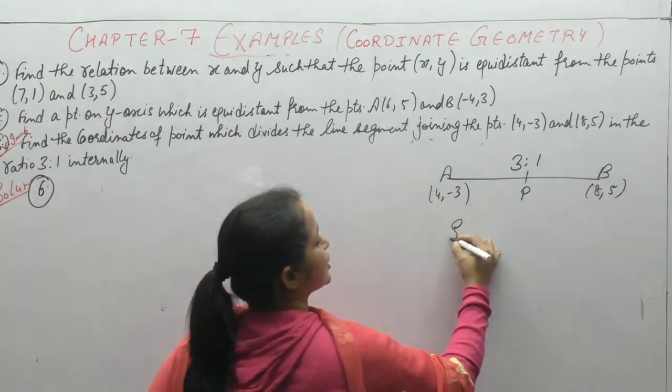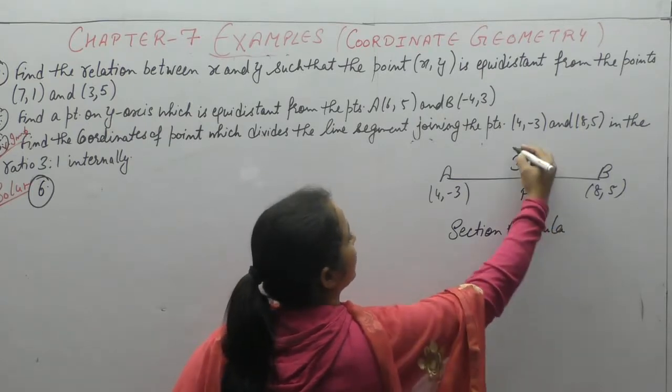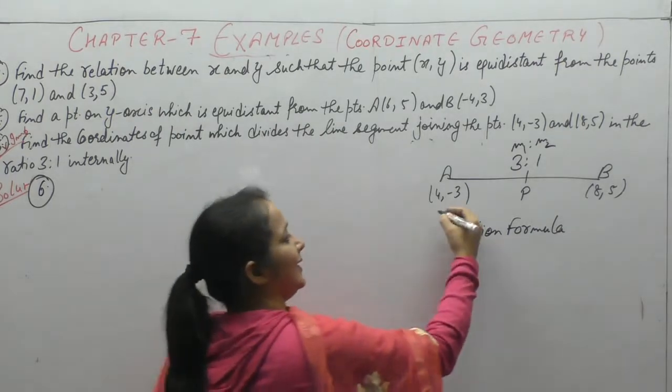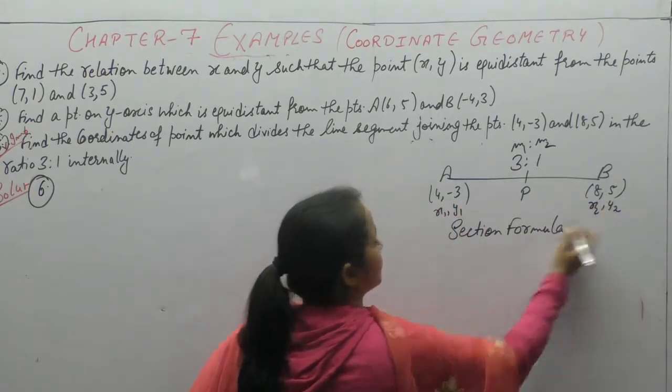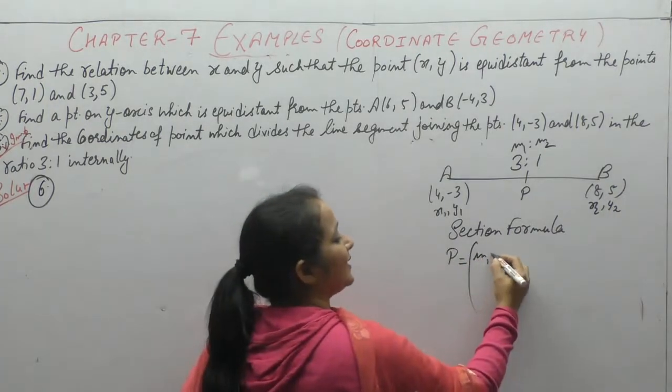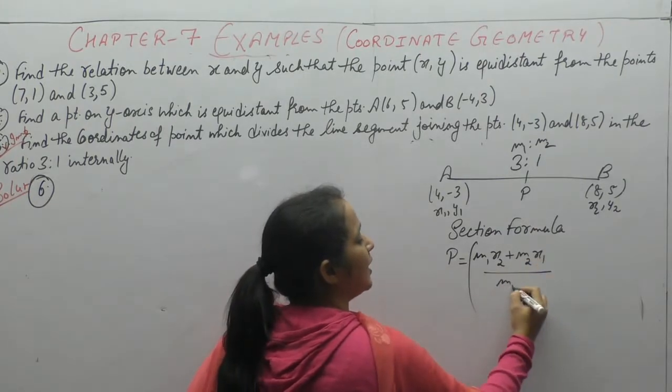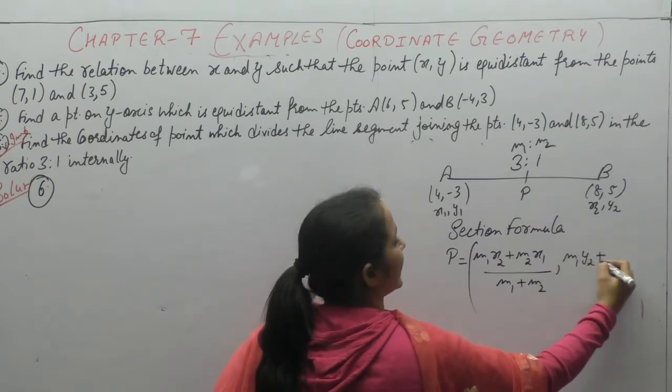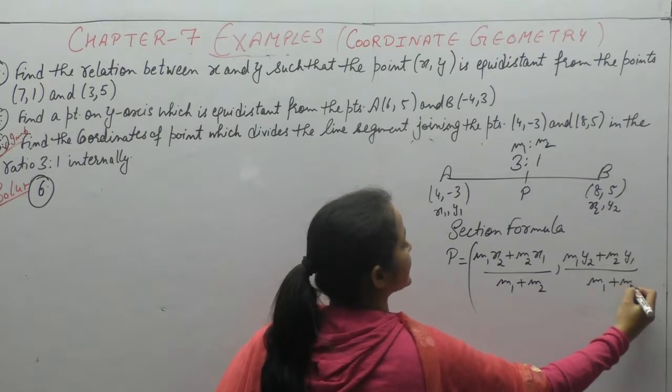If a line segment is divided by point P in ratio M1:M2, with endpoints (x1,y1) and (x2,y2), then coordinates of P are: [(M1×x2 + M2×x1)/(M1+M2), (M1×y2 + M2×y1)/(M1+M2)].